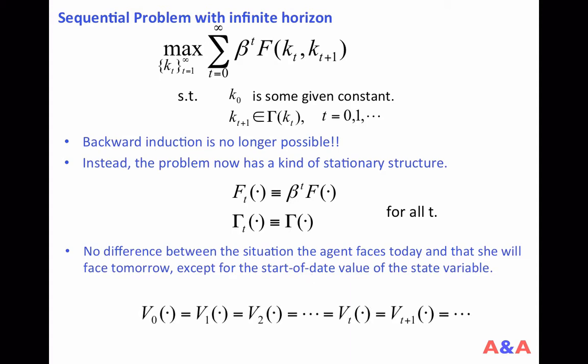So we can well guess that the value function V, the maximum attainable value as a function of the current state, should be the same every period. It shouldn't depend on the calendar time T because the problem the agent faces is identical every period. This is a feature of the infinite horizon problem.